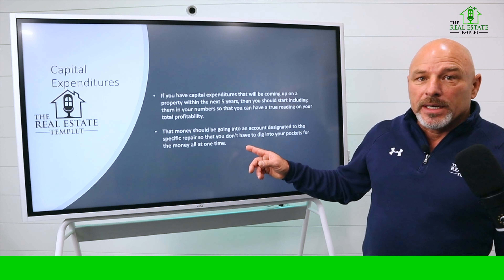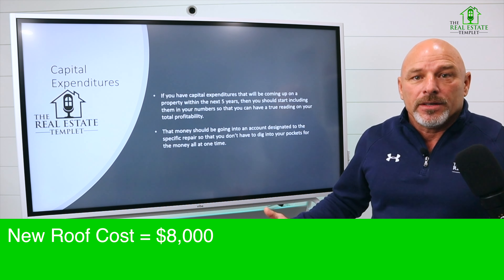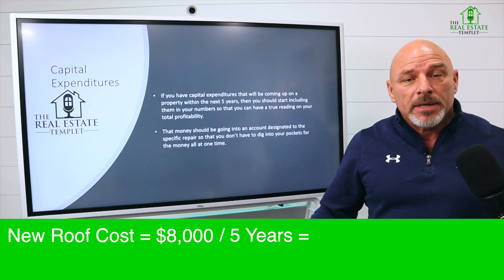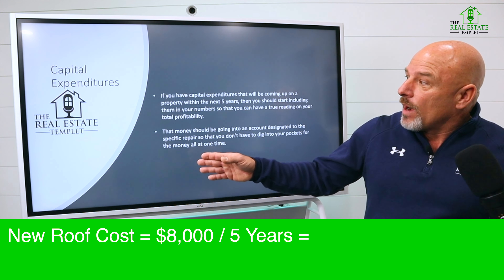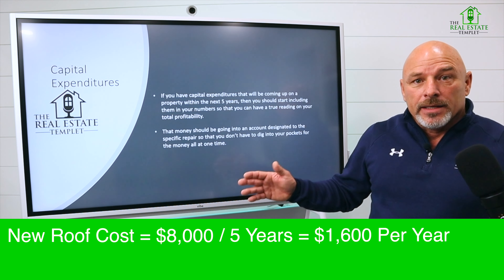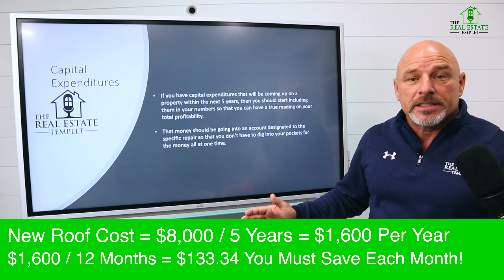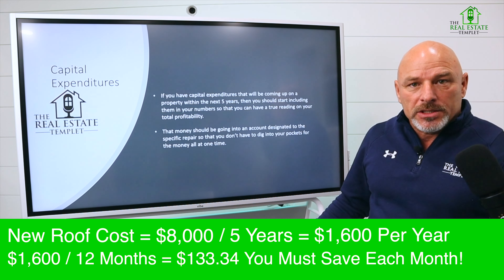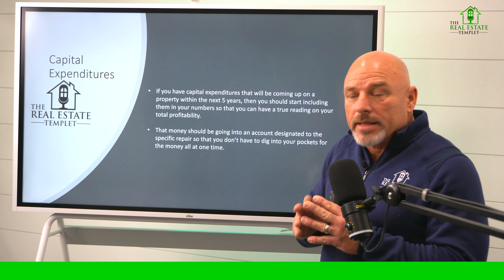What I would do at that point in time is say: if my roof is going to be $8,000, I would divide that by five years. So $8,000 divided by five is $1,600 a year. I would take that $1,600 a year and put it into a separate account on a monthly basis and have that money at the end of the five years so that I can just write a check, and it does not affect me personally to go in there and put that money on that roof.